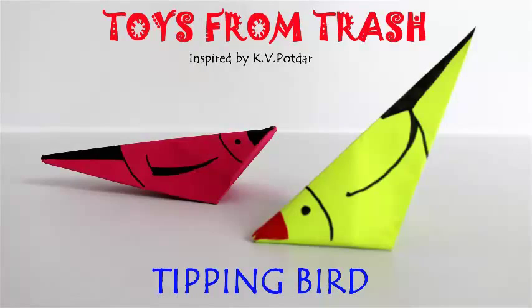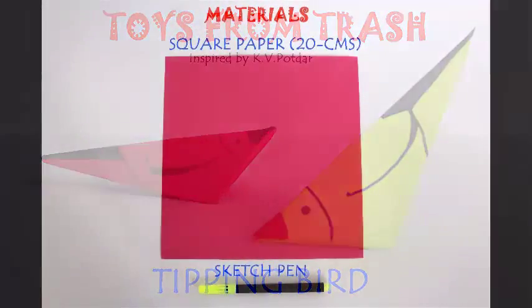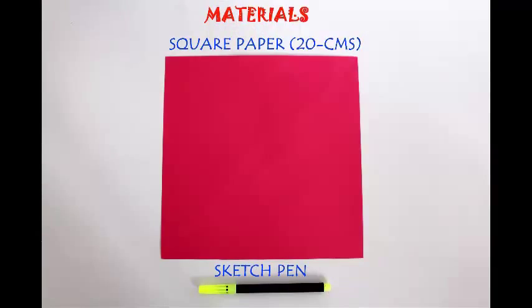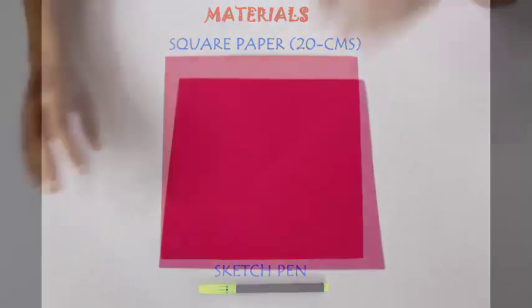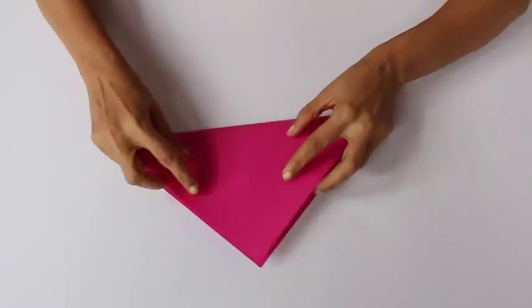This is a wonderful model of a bird which just tips to one side. For making this we require a square piece of paper 20cm on the edge and a sketch pen.